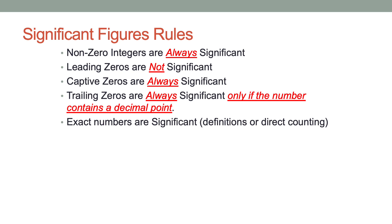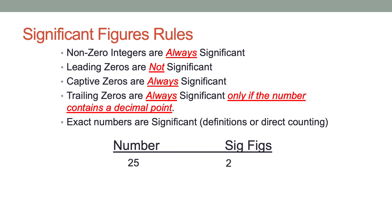Exact numbers are definitions or numbers that can be counted directly. For example, 25 has two nonzero integers, so there are two significant figures. 250 has a two and a five — two significant figures — but there's also a zero. The zero is a trailing zero, on the right side of nonzero integers at the end of the number. Trailing zeros are significant only if a decimal is present; in this case no decimal is present, so 250 has two significant figures.